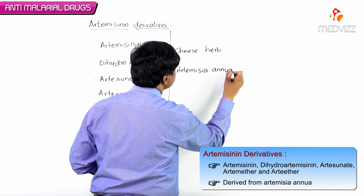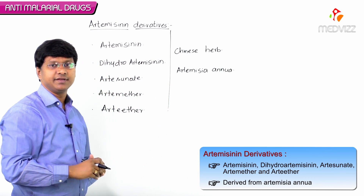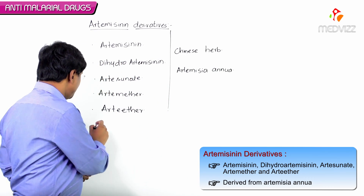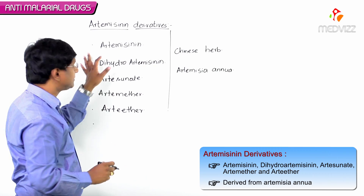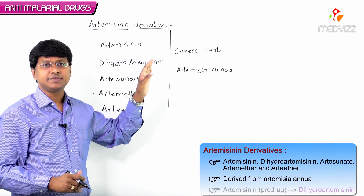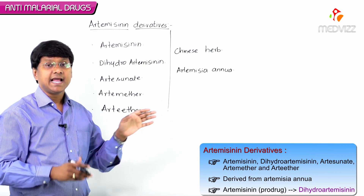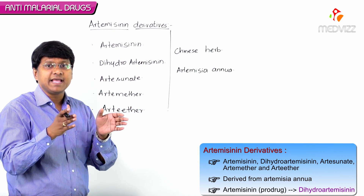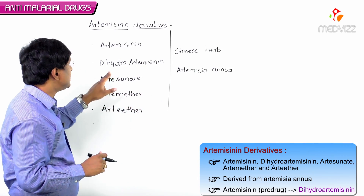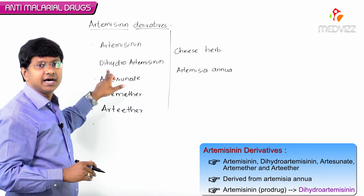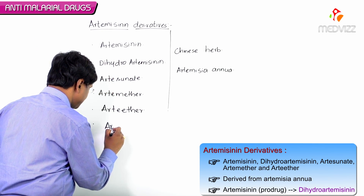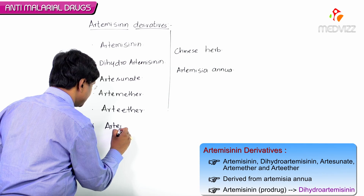Artemisia annua is the herb from which the artemisinin derivatives are derived. Remember, artemisinin itself is a prodrug and will be activated in the body to form what is called dihydroartemisinin.